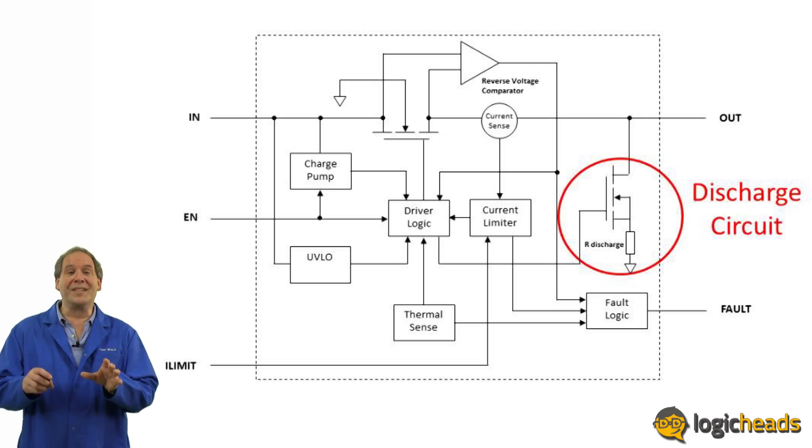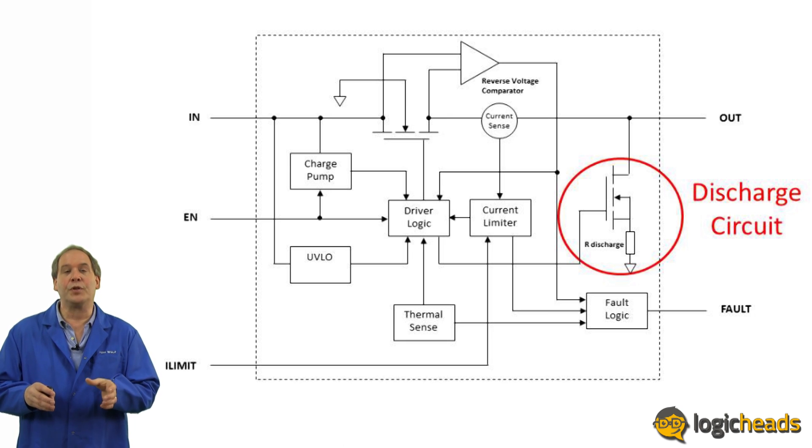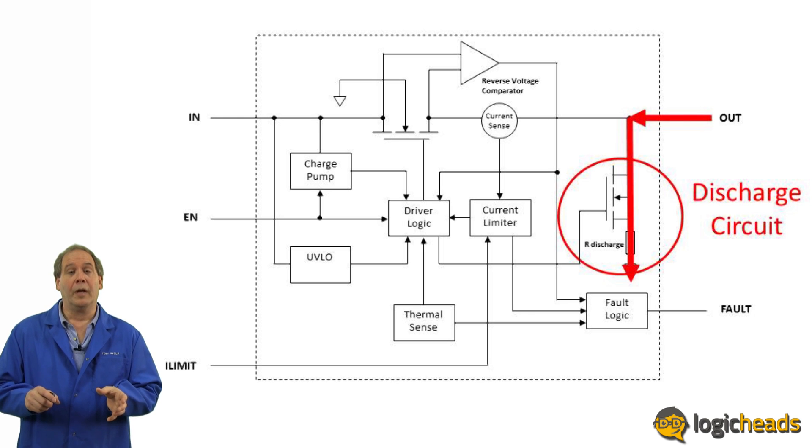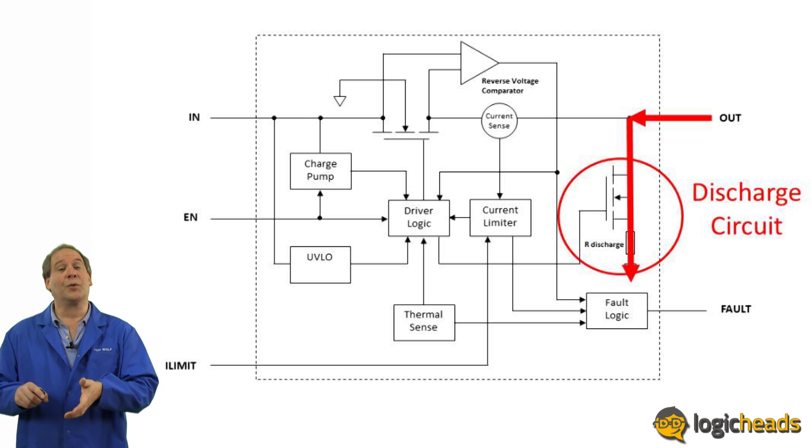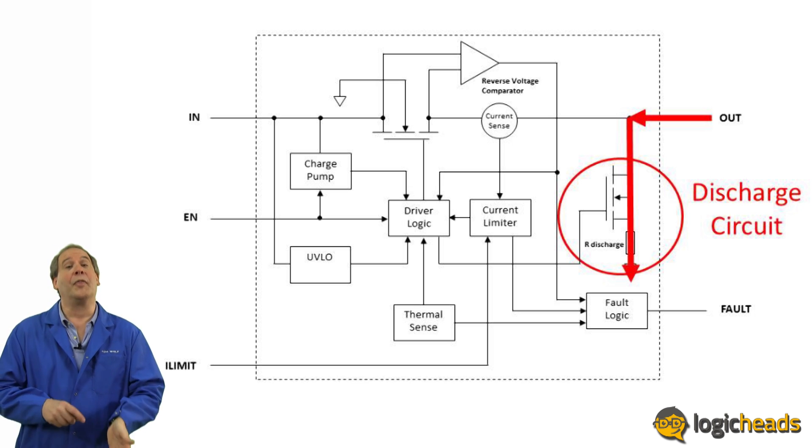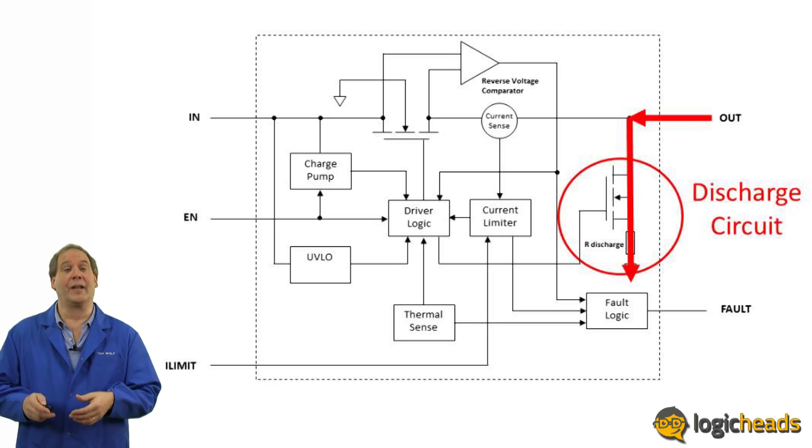When a load switch turns off, this doesn't necessarily mean that the voltage on the output side goes immediately to zero. Depending on the load and the capacitance there, it may take some time for that voltage to gradually drop down to zero. Digital electronics don't like slow ramps very much; they would rather be completely powered on or completely powered off. To help with this, a feature known as a discharge circuit can short the output to ground when the main FET turns off. This sends all of that stored charge right to ground and the receiving device sees zero volts just like it expects.